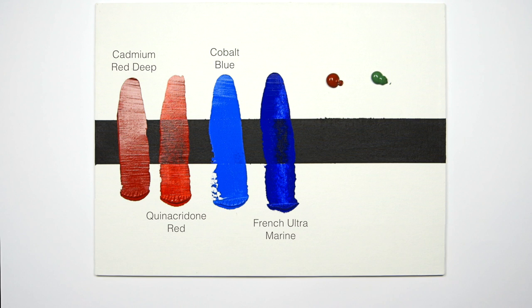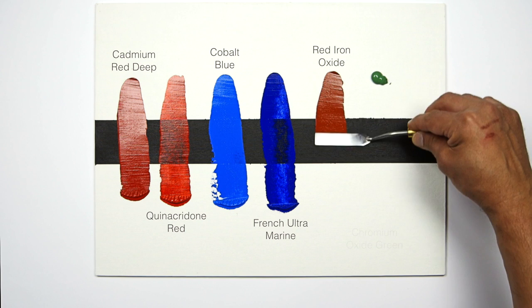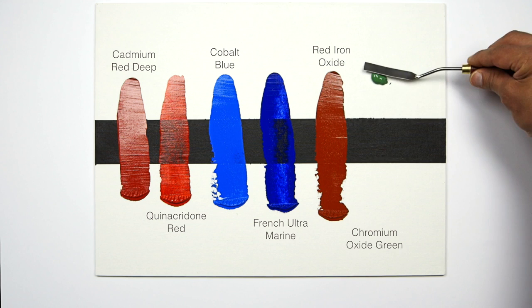When selecting your palette, don't just think about color selection but having a mixture of opaque and transparent colors. Traditionally, red iron oxide and chromium oxide green have been used for underpainting because they're both very opaque colors.